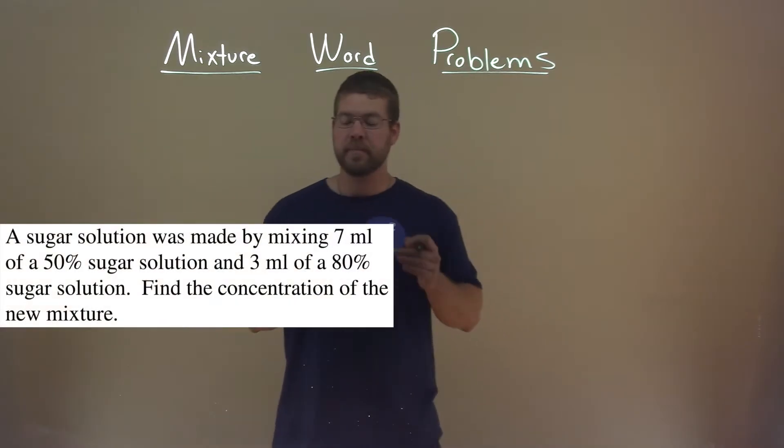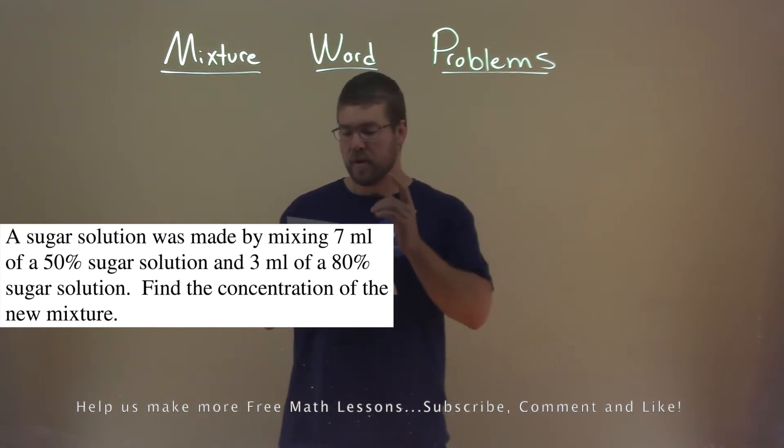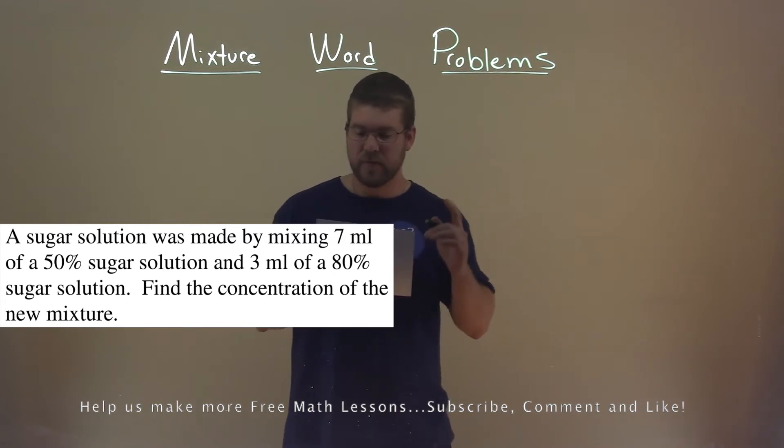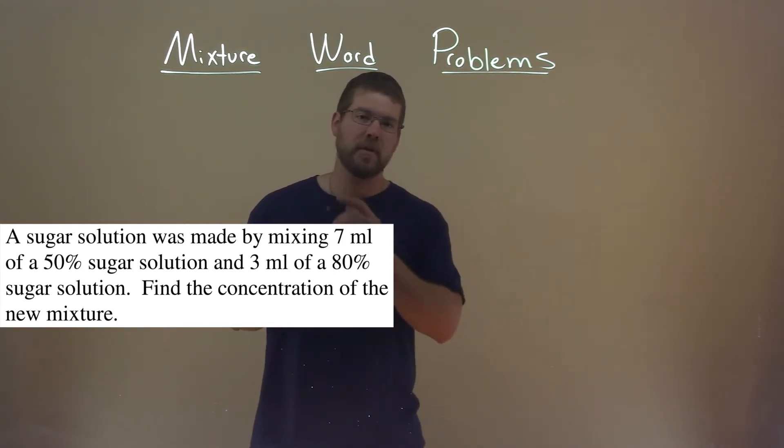We're given this problem right here. A sugar solution was made by mixing 7 milliliters of a 50% sugar solution and 3 milliliters of an 80% sugar solution. Find the concentration of the new mixture.